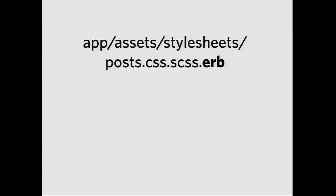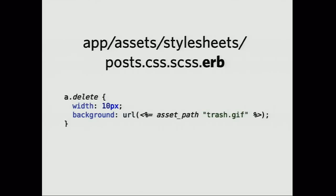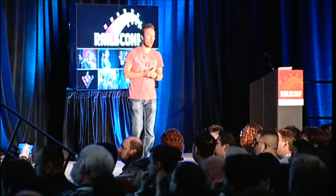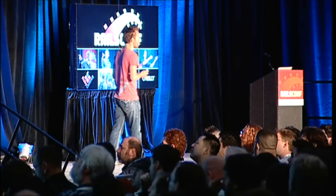Tilt has this cool feature that you can keep appending preprocessors. So you can apply SASS to stylesheets, and then also apply ERB on top of the SASS, which allows you to do things like reference helpers straight inside the JavaScript. That's really neat because it allows you to reference, for example, other assets you want to use straight in there.